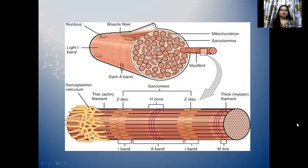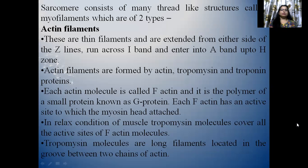Another diagram showing I-band, A-band, M-line, Z-disc, H-zone, thin filament, thick filament and muscle fibre. Sarcomere consists of many thread-like structures called myofilaments, which are of two types: actin filaments and myosin filaments. First, actin filaments: these are thin filaments that extend from either side of the Z-line across the I-band and enter into the A-band up to the H-zone.